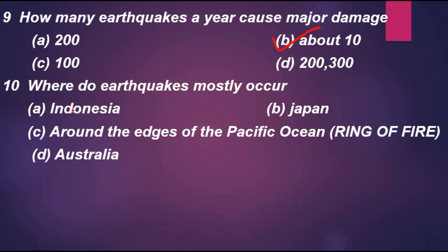Question 10: Where do earthquakes mostly occur? Option A: Indonesia. Option B: Japan. Option C: around the edges of the Pacific Ocean, rings of fire. Option D: Australia. The correct answer is B, Japan.